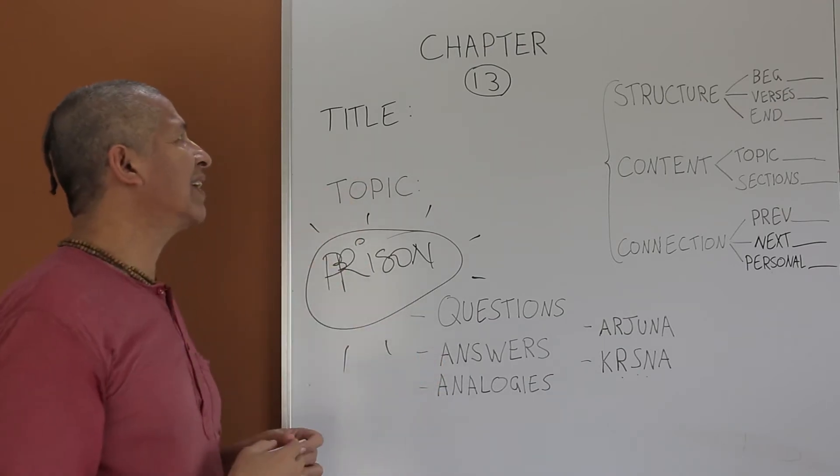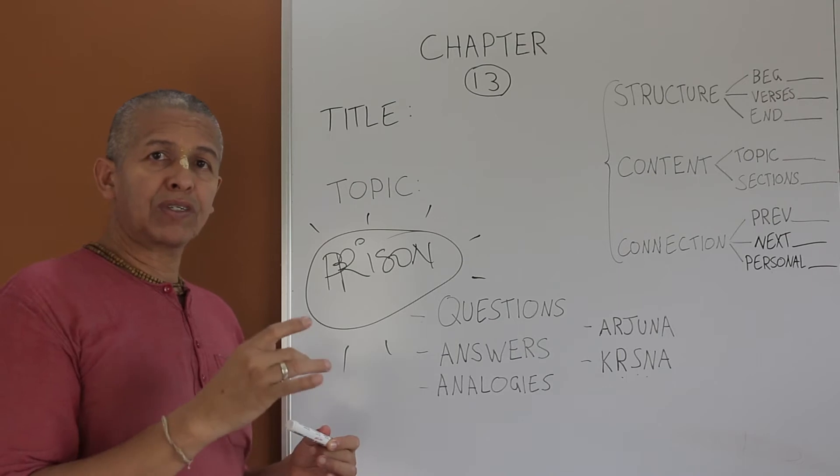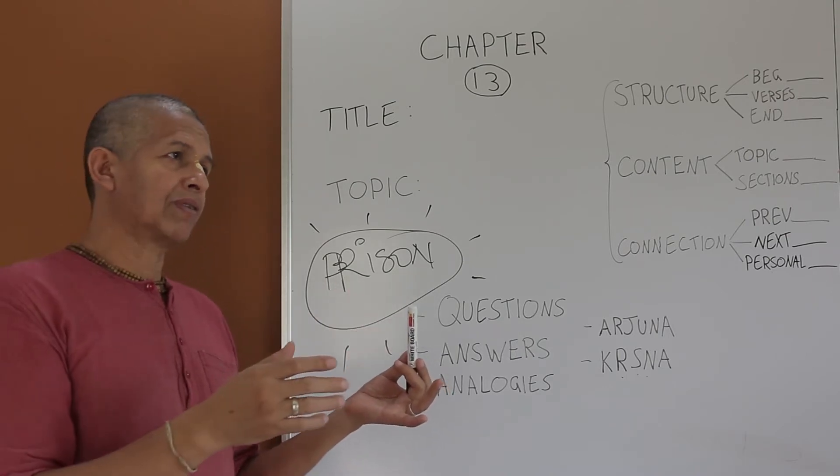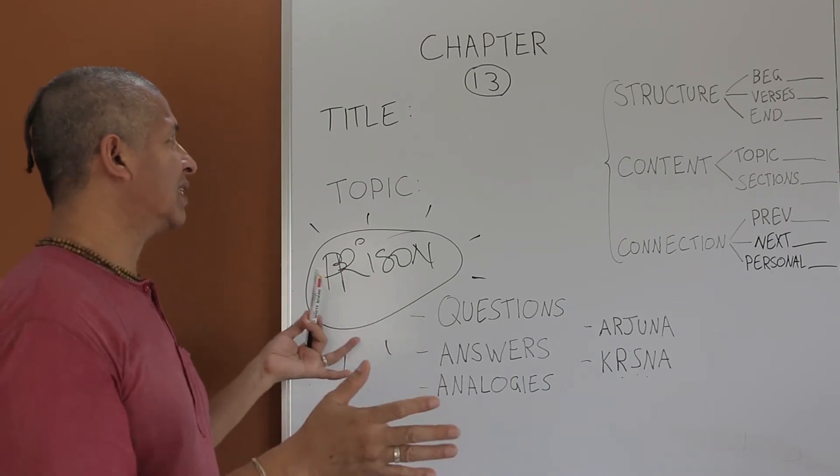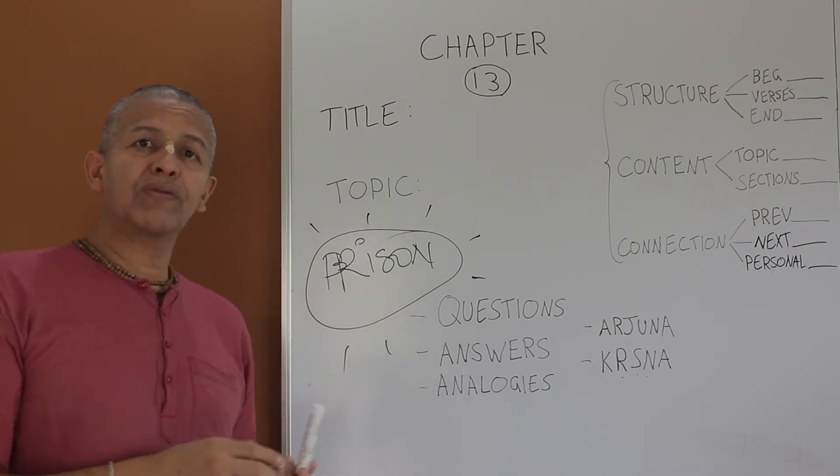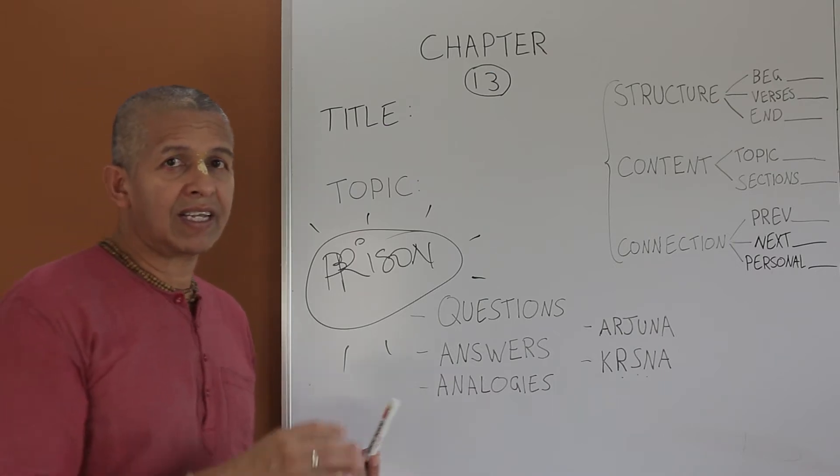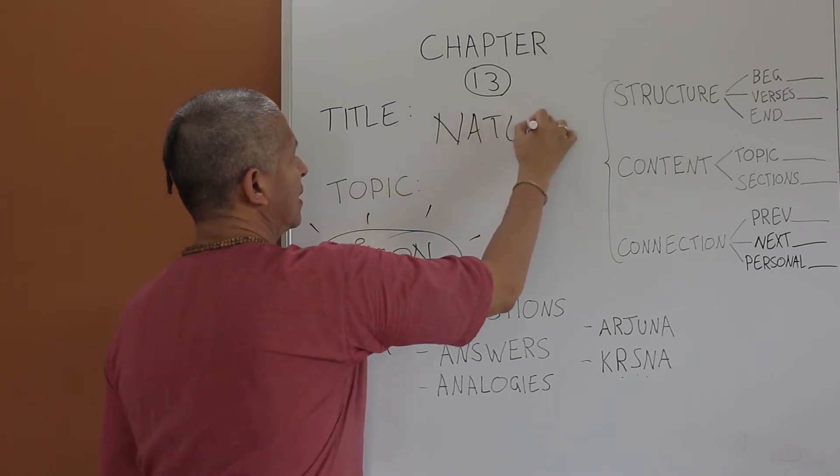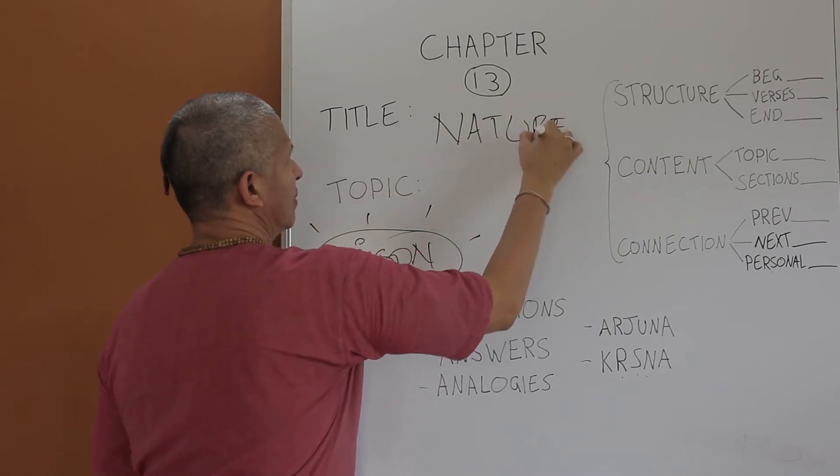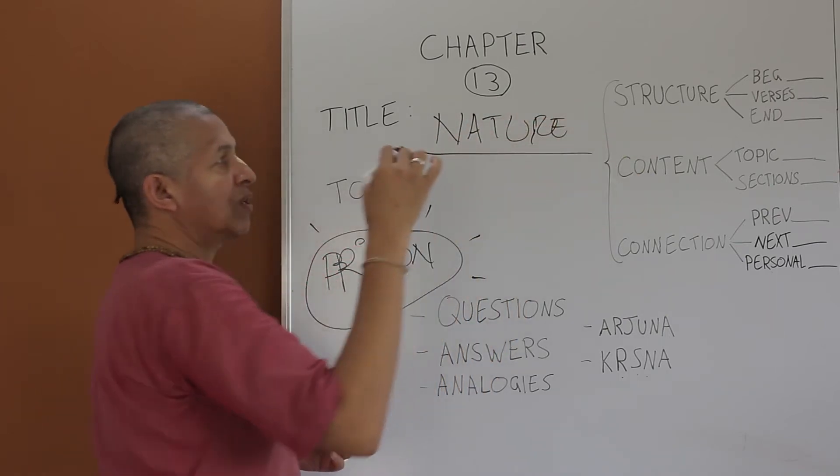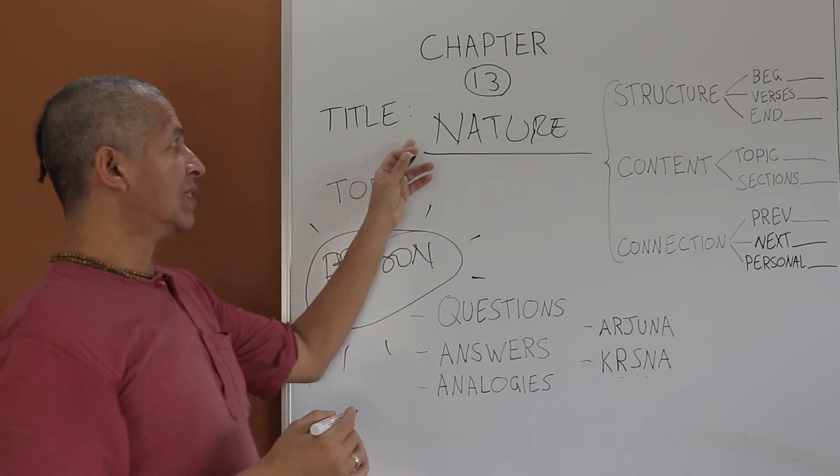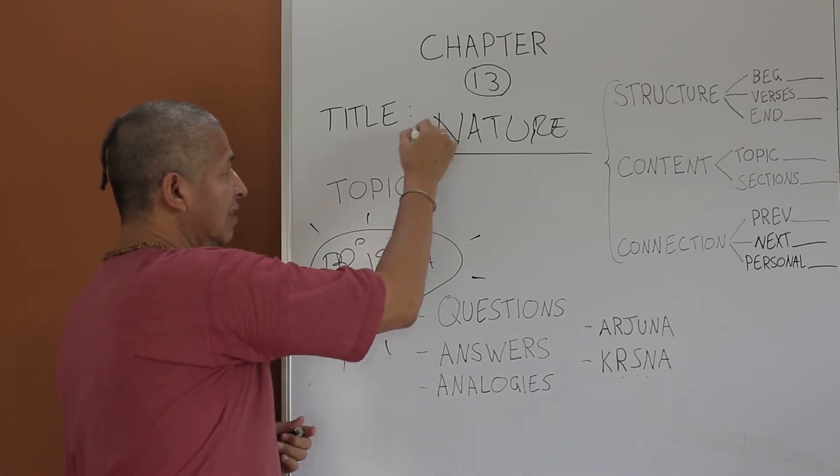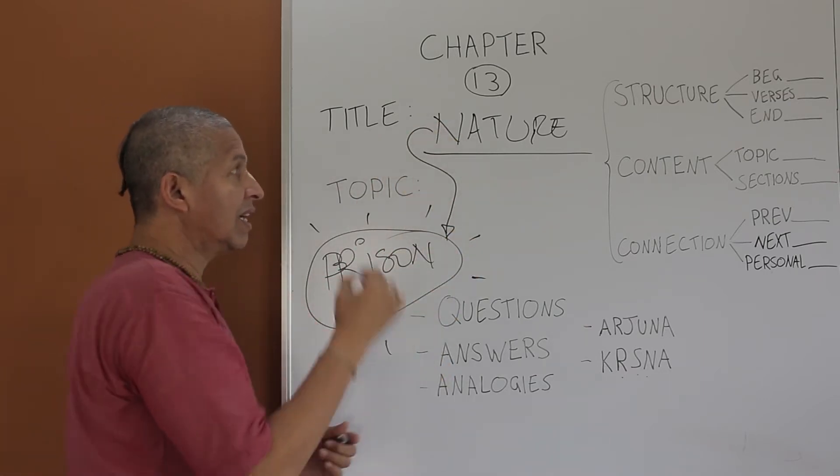We go to the title of the chapter. This chapter is called Nature Enjoyed in Consciousness. One of the longest titles in the Bhagavad Gita. What does it mean? For us to remember and understand easily this chapter, we have to just focus on one word from the title. Nature. What sort of nature are we talking about here? Nature actually is the prison house. It's called material nature.